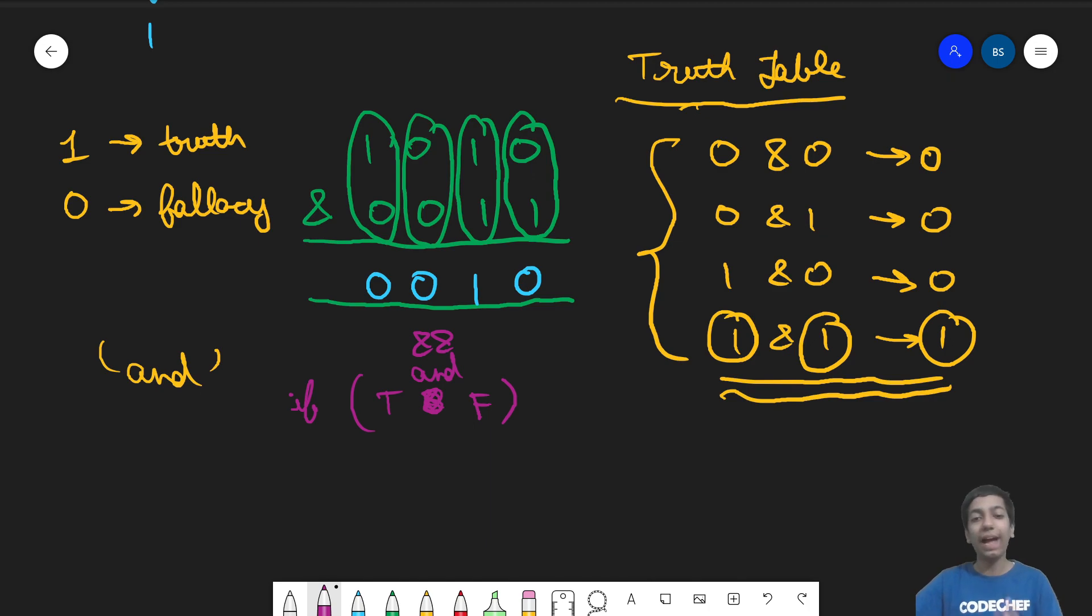So when will this get executed? So we know that these logical operators AND, OR and all. So AND needs both of them to be true. Only then the code inside gets executed. So this is the truth table. You don't have to memorize this. It is pretty intuitive.